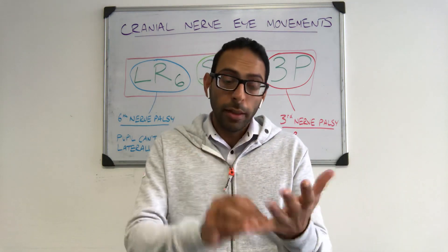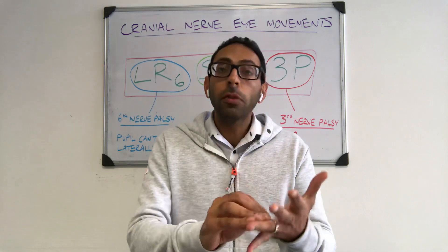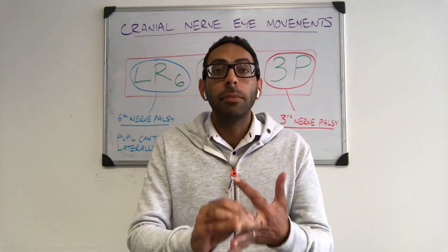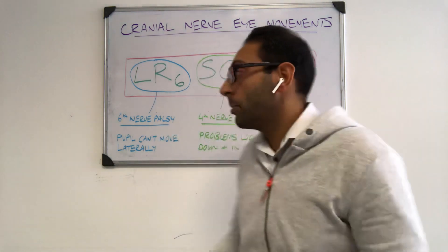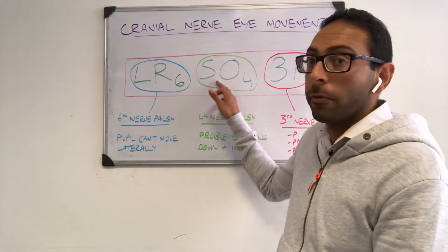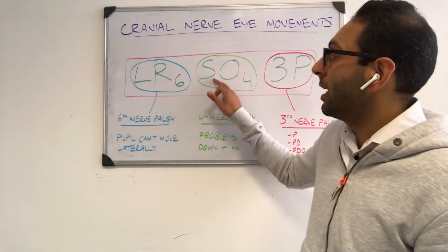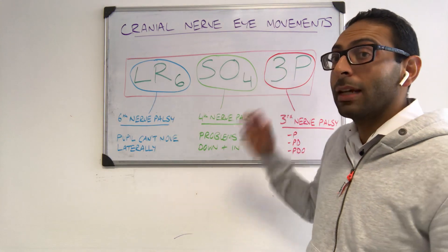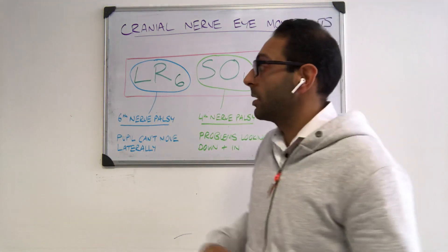We've got three nerves: the third nerve, oculomotor; the fourth cranial nerve, the trochlear; and the sixth cranial nerve, the abducens. Now we're all familiar with the equation LR6SO4, but we add a little bit extra. So LR6SO43P allows me to understand and remember these quite easily.